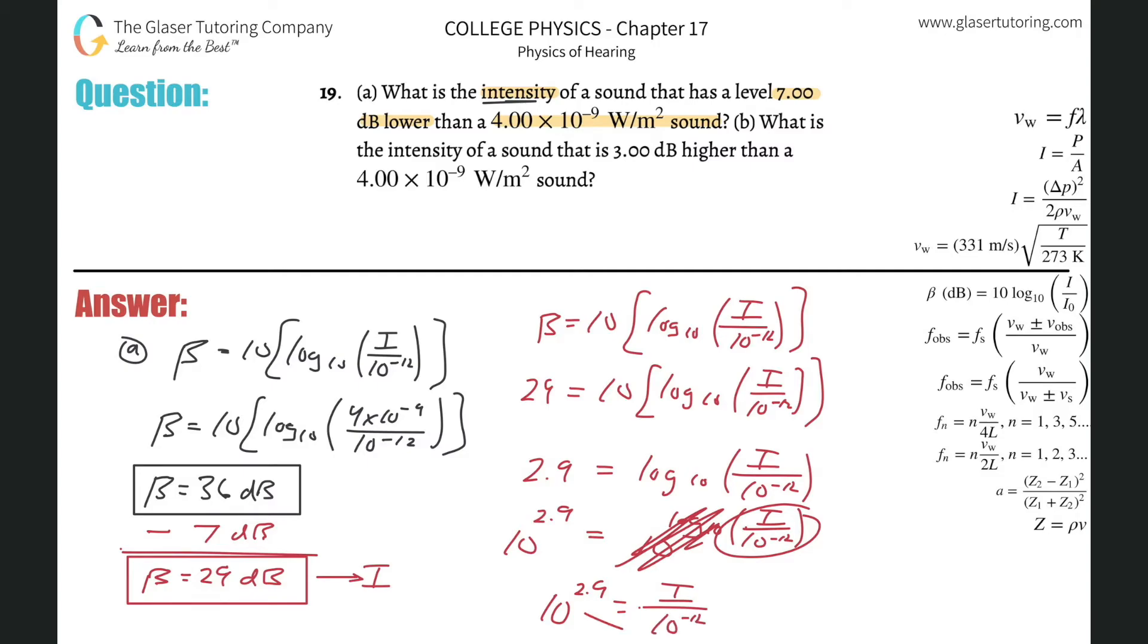Now all you got to do is just cross multiply. So the intensity will be, you can plug this into the calculator or you can just do rules of exponents, since you're multiplying these two same similar bases, you can just add those exponents. So this would be simply 10 raised to the, oh my goodness, my brain is like fried at the moment. This would be negative 9.1. Let's see. Negative 12 plus 2.9. Don't judge me. Yeah, negative 9.1.